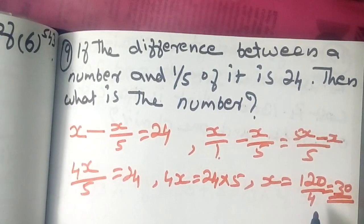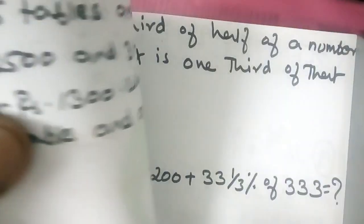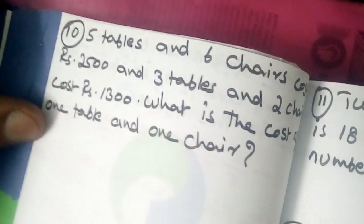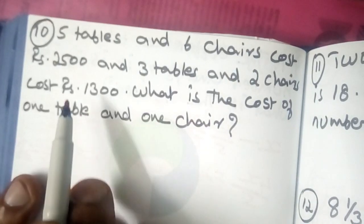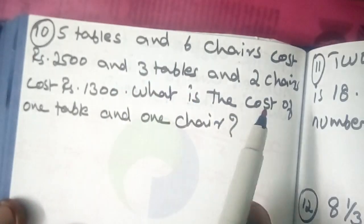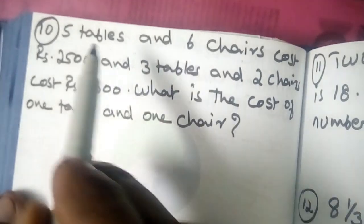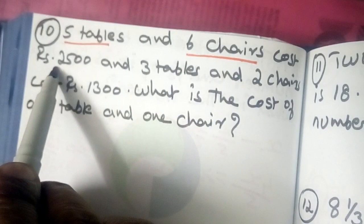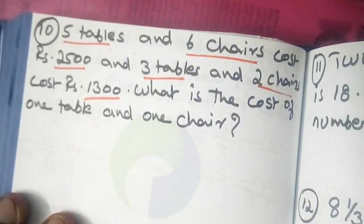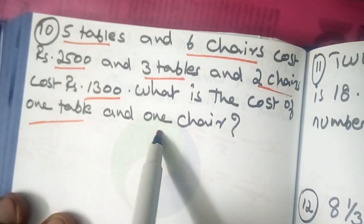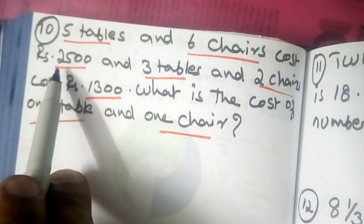So we have to go to the next question — question number 10. 5 tables and 6 chairs cost Rs. 2500, and 3 tables and 2 chairs cost Rs. 1300. What is the cost of 1 table and 1 chair?